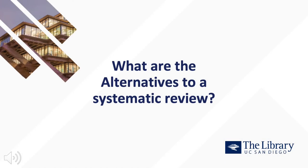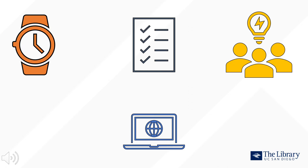What are the alternatives to a systematic review? Systematic reviews are time and resource-intensive undertakings, requiring multiple participants, adherence to specific standards, and often specialized software. There are, however, many other publication types that endeavor to synthesize evidence, albeit to different degrees. Depending on your timeline and the nature of your research, you may want to consider a different type of review.